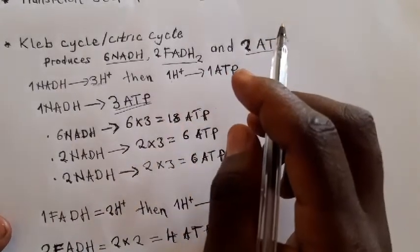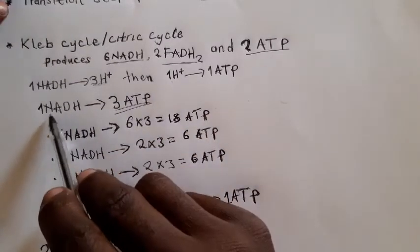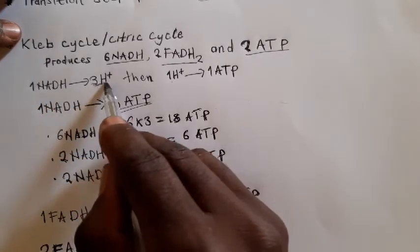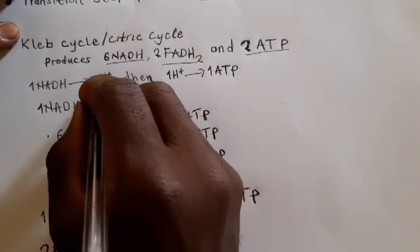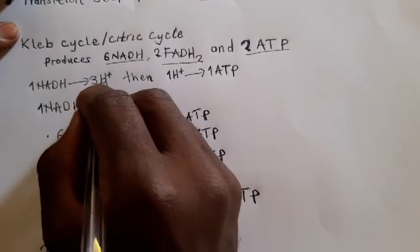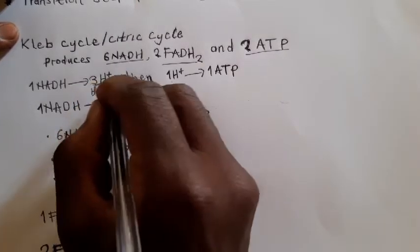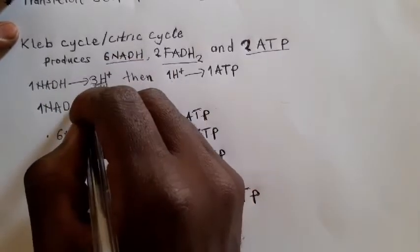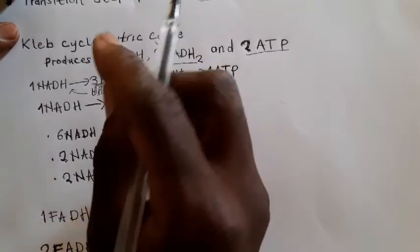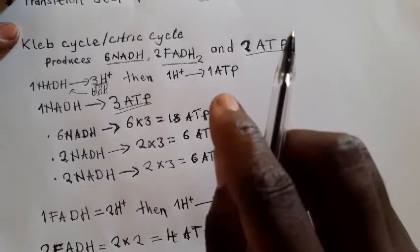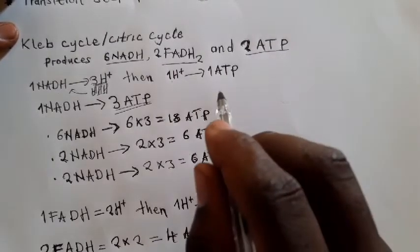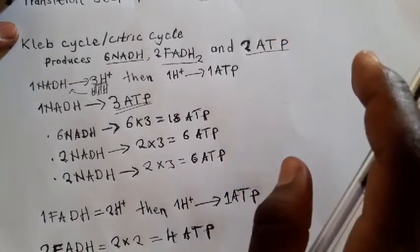So 1 NADH donating 3 protons means it produces 3 ATP. So one NADH produces three ATP. Now let's calculate the total amount of ATP produced from the metabolism of one molecule of glucose.